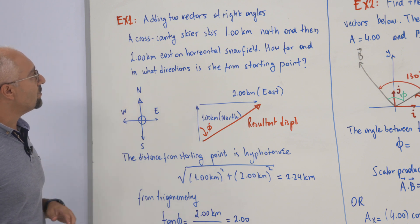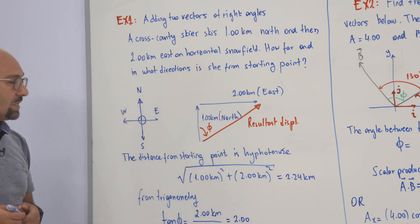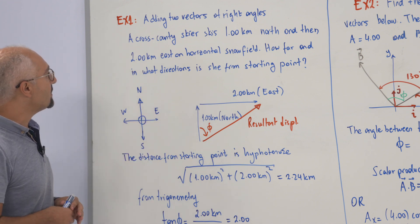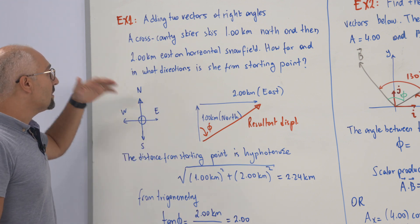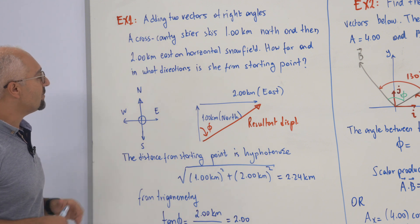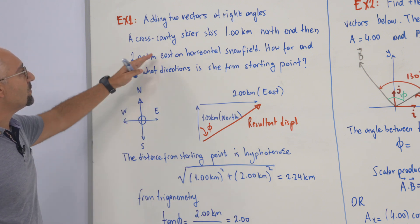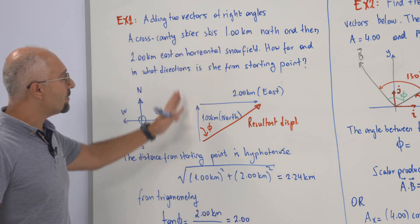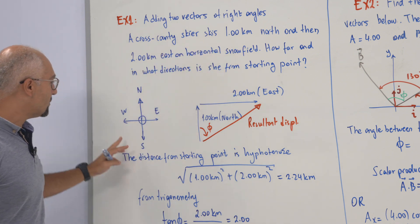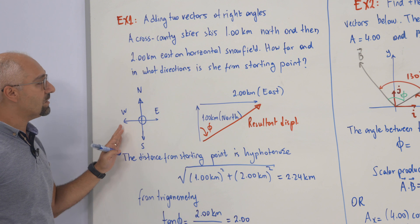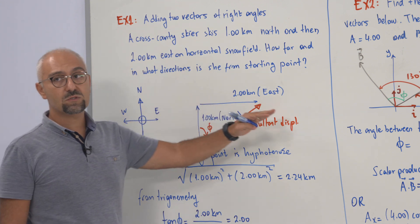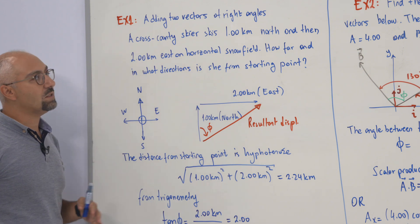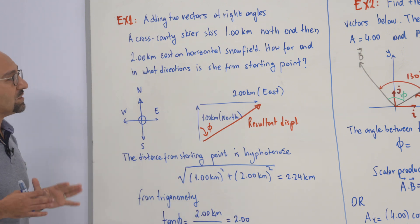The first example is based on how to calculate vectors in terms of representation. We are given two vectors at right angles — a skier who skis one kilometer to the north and two kilometers to the east. We want to understand how far and in what direction she is from the starting point.